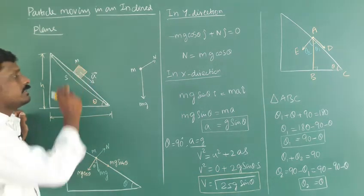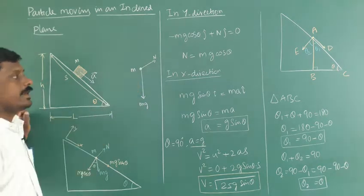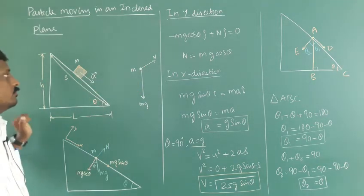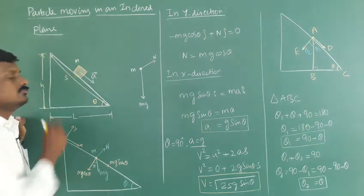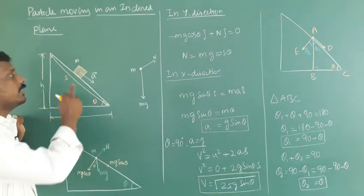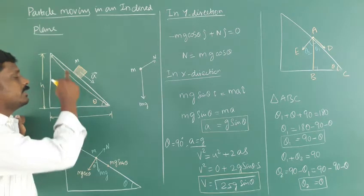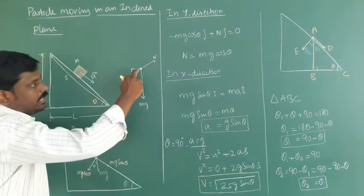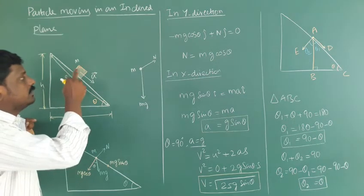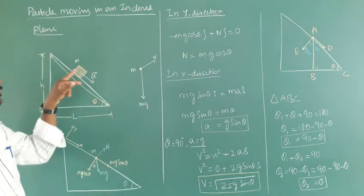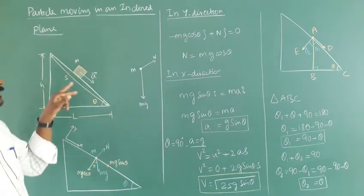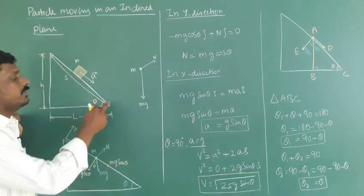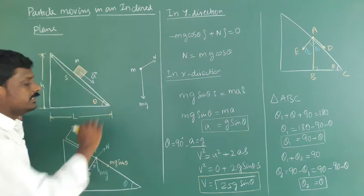The mass m is considered as a point mass. The forces acting on the point mass are a gravitational force and a normal force exerted by the surface. These two forces decide the acceleration of the object and the speed of the object when it reaches the bottom of the inclined plane.